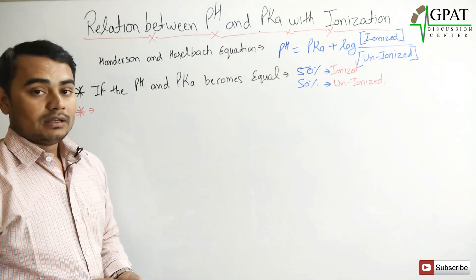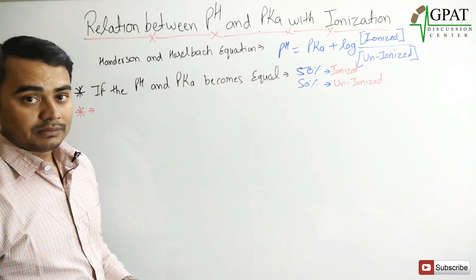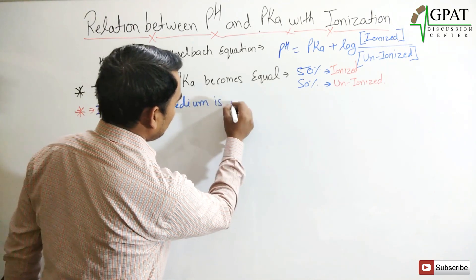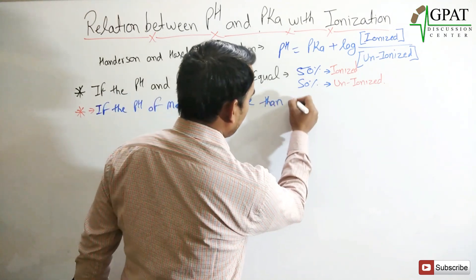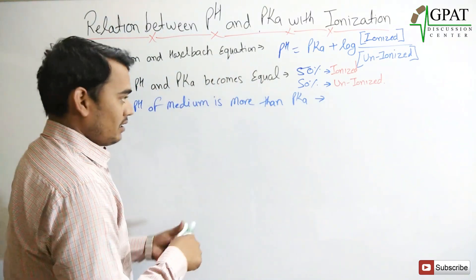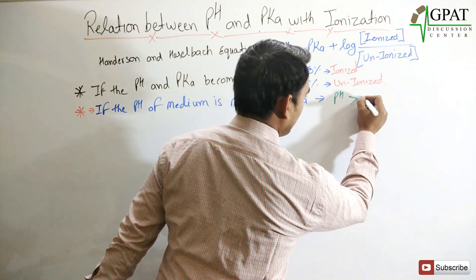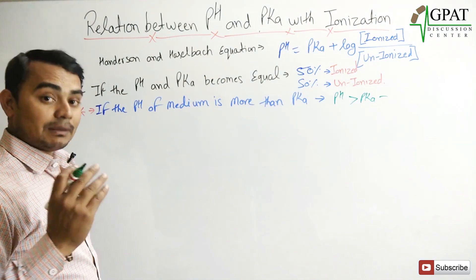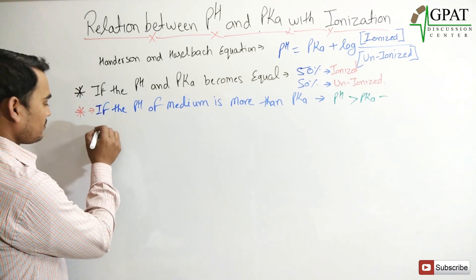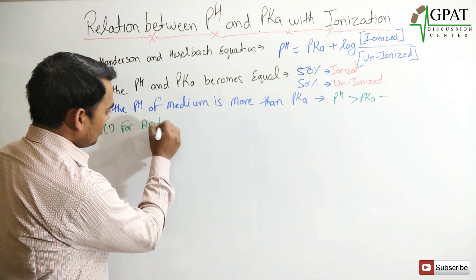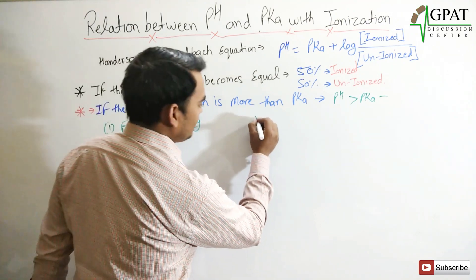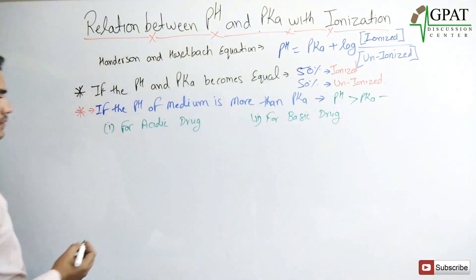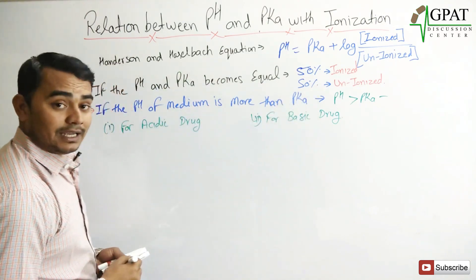The next condition is when the pH of the medium is greater than pKa. In this case, two sub-conditions arise depending on whether the drug is acidic or basic.